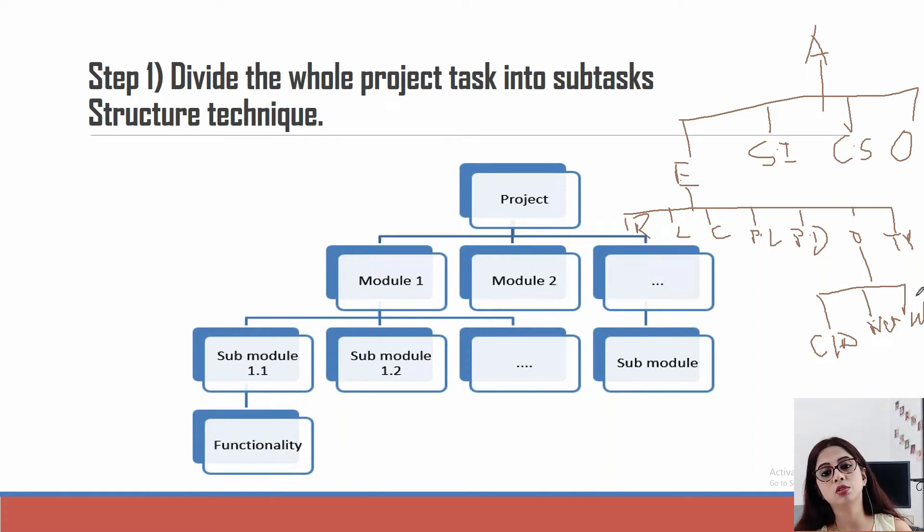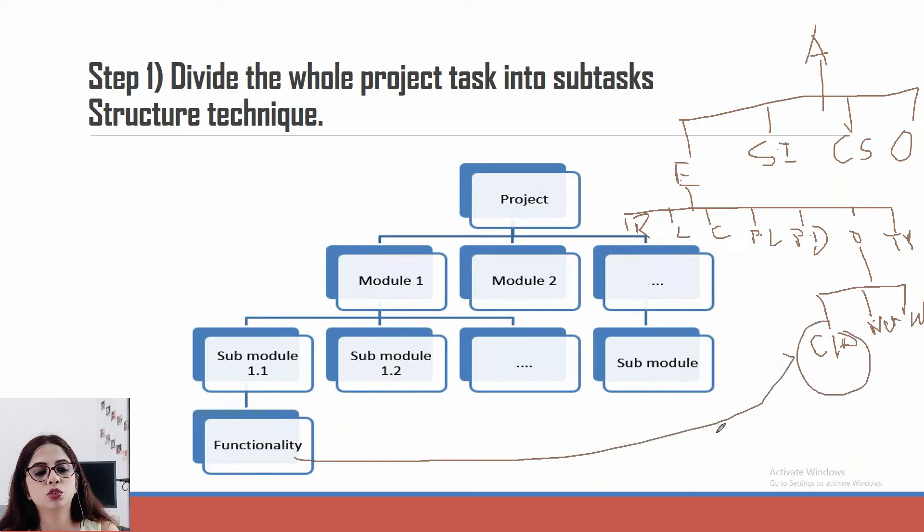So work breakdown structure is a very, very useful method of starting to estimate any project. So once we know that this particular functionality will need around five hours of work, so the estimation is five hours. This will need two hours, this will need three hours.